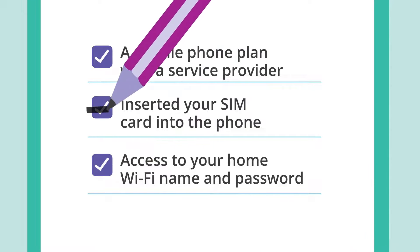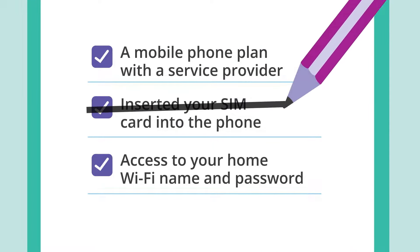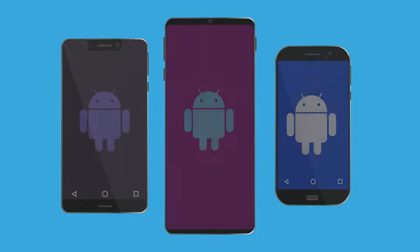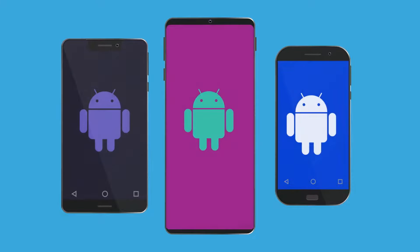If you don't have a SIM or a mobile plan yet, you can still set up your phone and be able to follow along with this video. There are many types of Android phones. If your Android phone is a different model to the one shown in this demonstration, the steps might be slightly different, but you can still follow along.